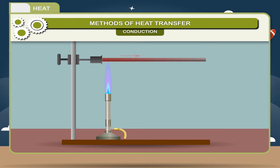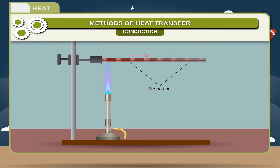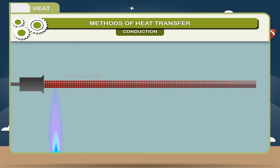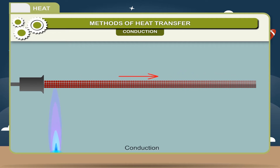When an object is brought near a source of heat, the molecules closer to the source get more energy. When these molecules collide with their neighbors, they transfer some energy to their neighbors. These molecules then collide with another set of molecules. This is how heat flows from a hot part to a colder part. In this flow, the molecules do not move from their positions — this process of heat transfer without actual movement of molecules is called conduction.